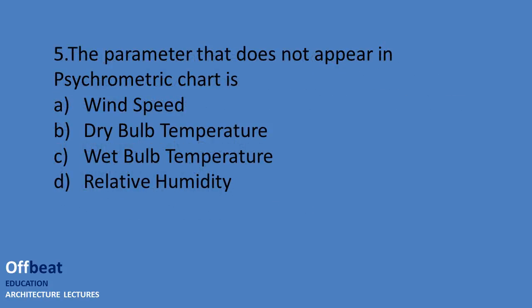The parameter that does not appear in the psychrometric chart is wind speed. The other options — dry bulb temperature (DBT), wet bulb temperature (WBT), and relative humidity — all appear in the psychrometric chart.